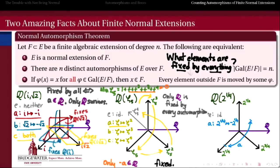Only Q is fixed by every automorphism in this Galois group — just the base field. Everything which doesn't belong to the base field gets moved by some automorphism in this group.